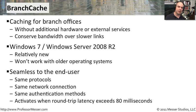Branch Cache keeps track of how your network is performing. If network performance is good, it works normally. But if your round trip latency exceeds 80 milliseconds — which certainly happens on very slow WAN links — Branch Cache automatically kicks in. There's nothing the user has to turn on or off; it's completely seamless and automatic.